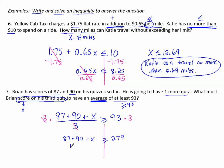We have 87 plus 90 plus X is greater than or equal to 279. Combine these like terms, and that makes 177 plus X is greater than or equal to 279. And finally, subtract 177 from both sides so that X is by itself, and X is greater than or equal to 102. So Brian must score at least 102 on his third quiz.